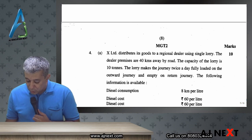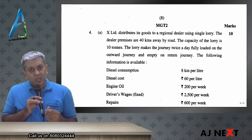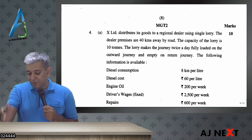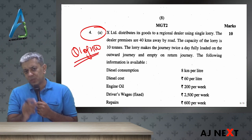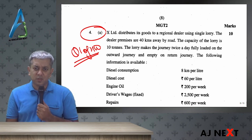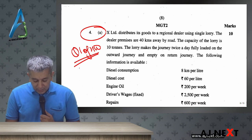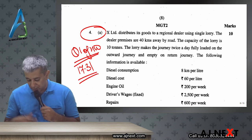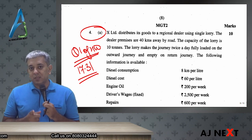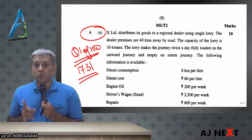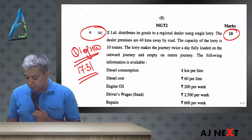Now question number four — I kept telling you all in class to practice the homework section at the back. Those students who did it will have realized and benefited from it. Question number four was exactly question number one of our homework section. Numbers were slightly here and there, but it was the same wording, same expenses, everything was the same. It was question number one of homework, on page number 17.31 in the homework section at the end. For those students attending classes now, it is very important that you practice those questions — they are also important and your paper can come from there. This question was asked for 10 marks.